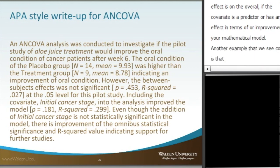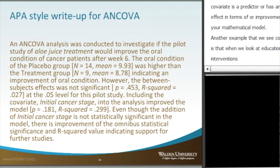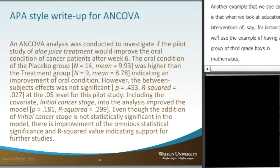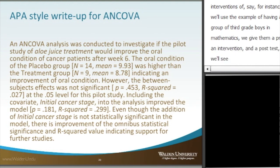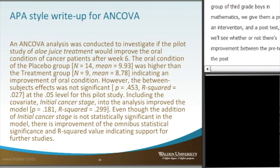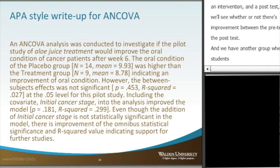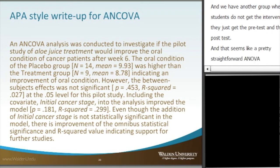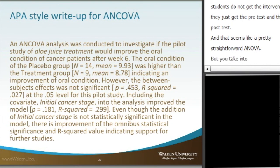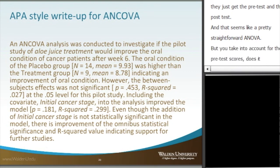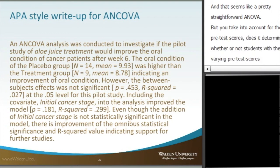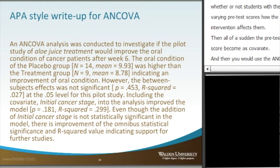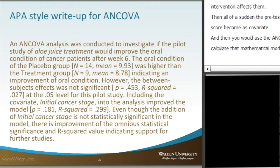A common educational example is having two groups of third-grade boys in mathematics: one group gets a pre-test, an intervention, and a post-test; the other group gets only the pre-test and post-test without the intervention. That looks like a straightforward ANOVA, but if you account for pre-test scores to see how the intervention affects students with varying prior knowledge, the pre-test score becomes a covariate and you would use ANCOVA. ANCOVA gives you more information by incorporating that additional variable into the model.